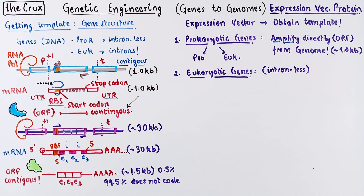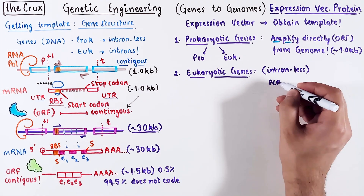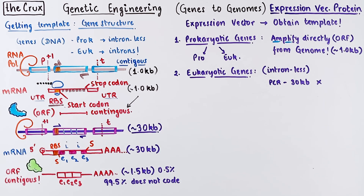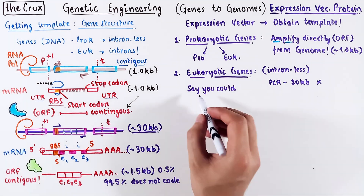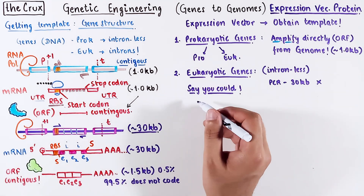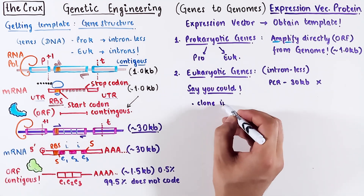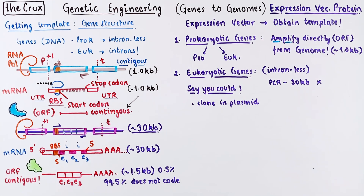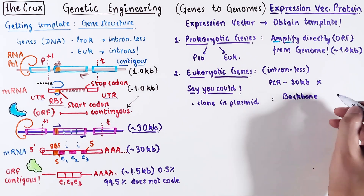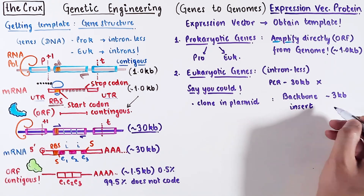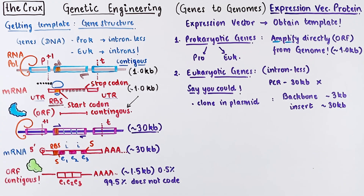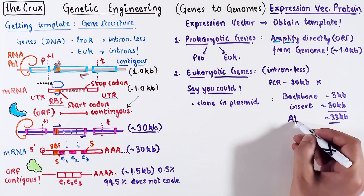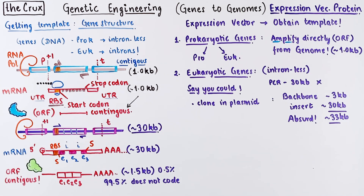For intron-containing genes, that'll be a 30 kb PCR. A 30 kb PCR is possible, but no thanks. But let's imagine you could do this routinely — totally hypothetical. The next step would be to ligate the PCR amplicon into a plasmid. A typical vector backbone is around 3 kb, and the insert — the PCR product — is 30 kb. Even if you magically managed to clone it, it'll be a 33 kb plasmid. A plasmid is typically less than 25 kb, and even that is pushing the limits — a 33 kb plasmid is absurd.